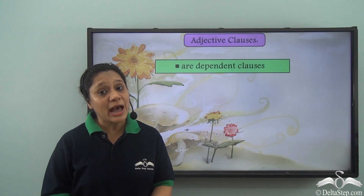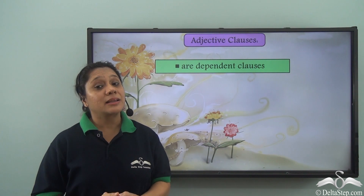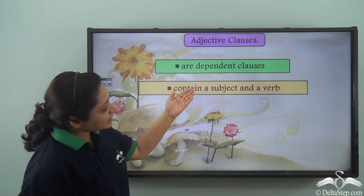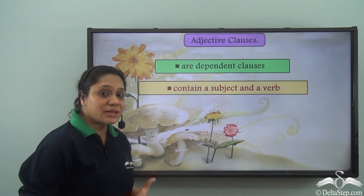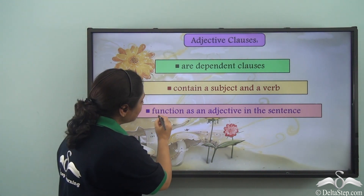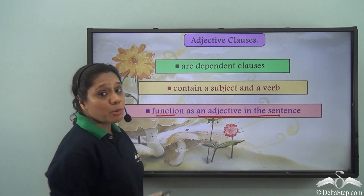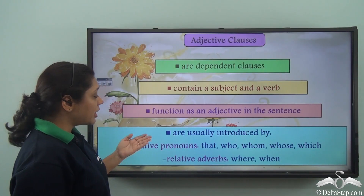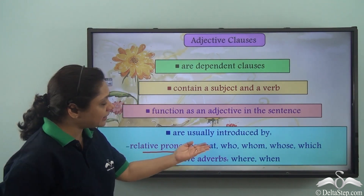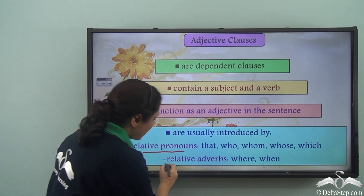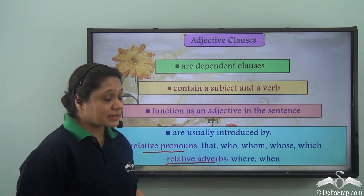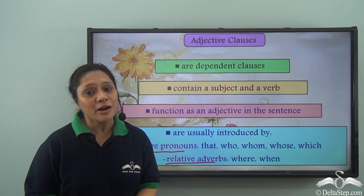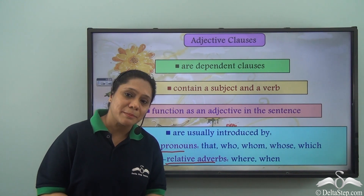So what have we learnt today? We have learnt about adjective clauses in detail. Adjective clauses are dependent clauses — they contain a subject and a verb, they function as an adjective, and they describe a noun or pronoun in the sentence. Adjective clauses are usually introduced by relative pronouns like 'that,' 'who,' 'whom,' 'whose,' 'which,' or by relative adverbs of place like 'where' and time like 'when.' Practice adjective clauses and you will master them. We will soon learn about other clauses.